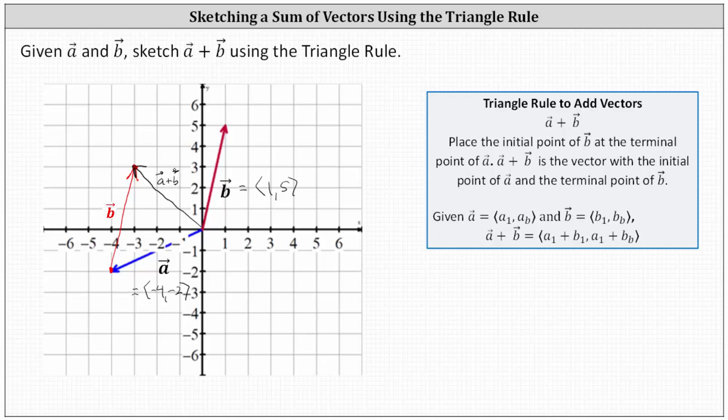Notice the component form of the resultant vector has an x component of negative three and a y component of positive three. Let's go ahead and record this.